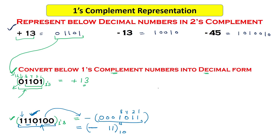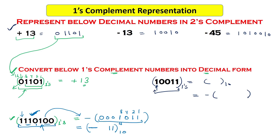One last example: the number 10011 in 1's complement. Since the MSB is 1, it is a negative number. Flip all bits including the last bit: 10011 becomes 01100. Converting 01100 to decimal: 4 + 8 = 12. So 10011 in one's complement represents minus 12 in decimal.